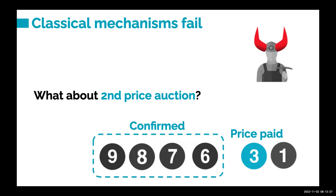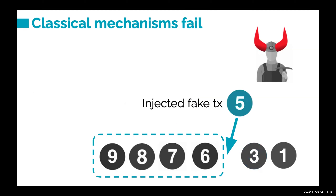You may ask why we don't use a second-price auction, which was classically believed to be an optimal mechanism. If we run second-price auction with block size four, users pay the fifth-highest price, which is three. The problem is that in a decentralized environment, even the auctioneer — the miner — can be a strategic player. The miner is incentivized to inject a fake transaction just epsilon below the K-th price, causing everyone to pay five instead of three, earning the miner more.